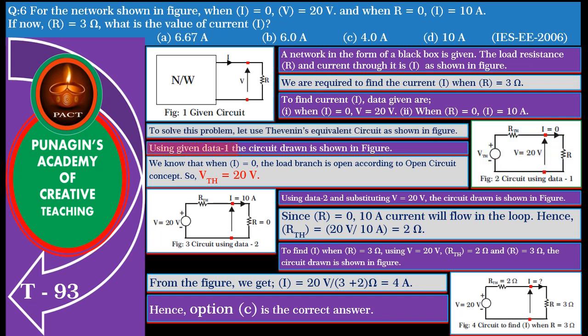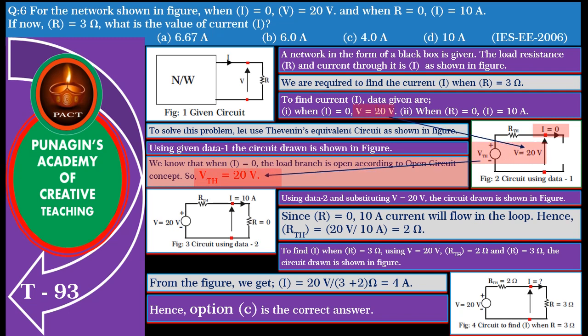Using data 1, the circuit drawn is shown in the figure. We know that when I equals 0, the load branch is open according to the open circuit concept. So the Thevenin voltage equals 20 volts.